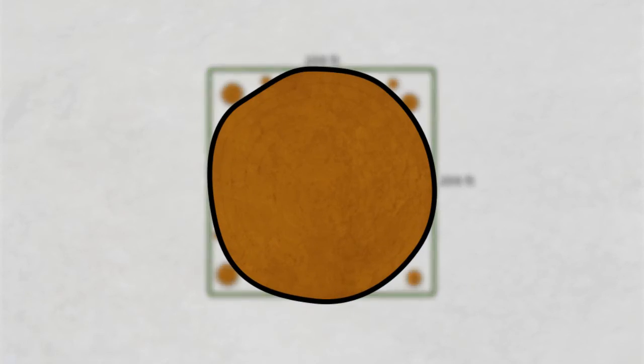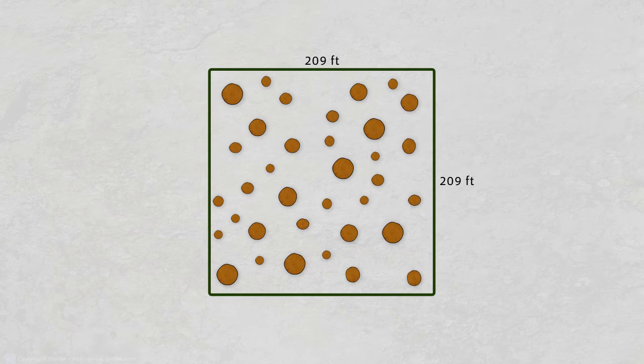Ideally, we would determine the area of each of the circles representing each of the trees on that one acre of forest land.